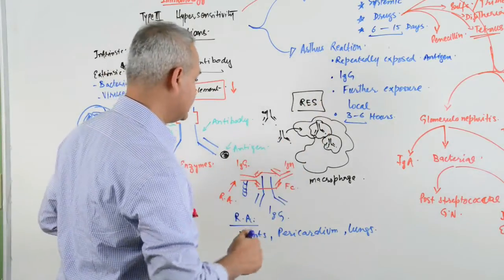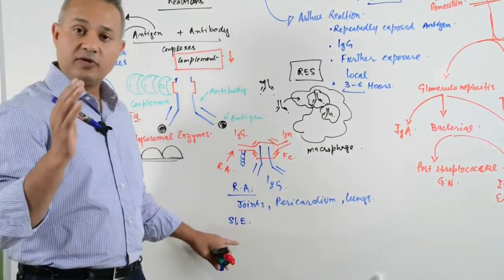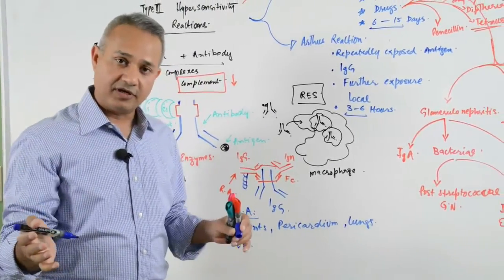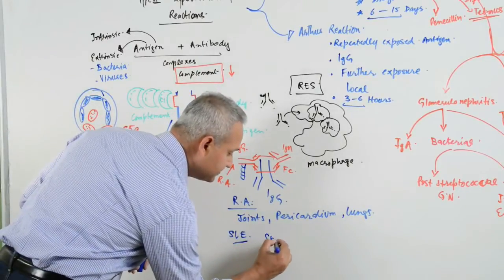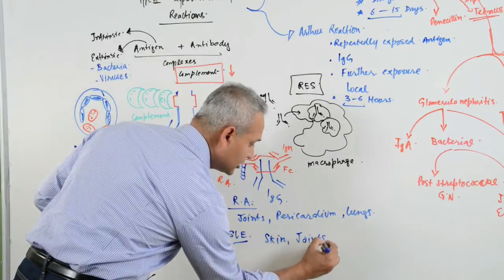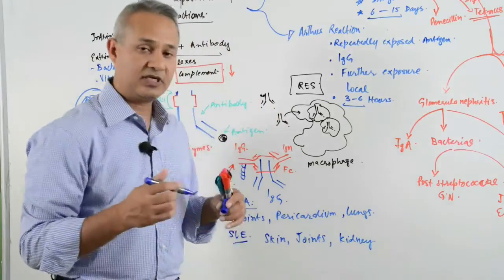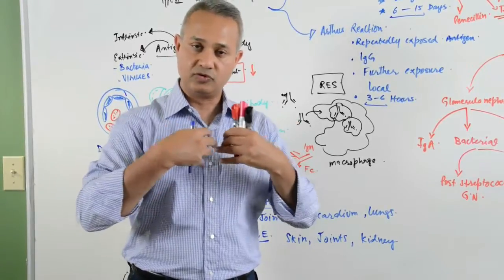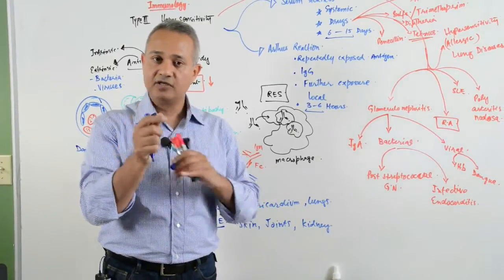On the other hand, SLE systemic lupus erythematosus is also a chronic inflammatory autoimmune disease mostly in women, but this includes skin of the face and joints, common with rheumatoid arthritis, and then kidney. So rheumatoid arthritis is joints, lungs, and pericardium, chest area and joints. And SLE is face skin, joints, and kidney.